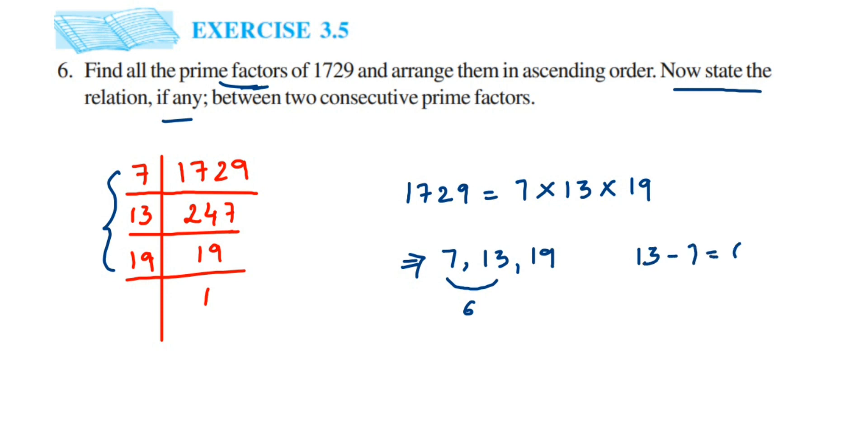So if you subtract 13 and 7, you will get 6. Now, like I said before, if you do for 13 and 19 also, you will get the difference as 6. So now you can subtract it: 19 minus 13 is again 6. So this is the relationship. If you subtract the two consecutive prime factors which you got for this question, you will get the difference 6.